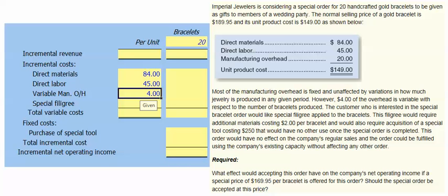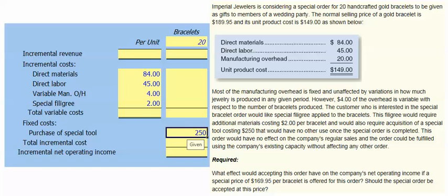The customer interested in the special bracelet order would like a special filigree applied to the bracelets. The filigree would require additional materials costing $2 per bracelet and would also require the acquisition of a special tool costing $250 that would have no other use once the special order is completed. This order would have no effect on the company's regular sales and could be fulfilled using existing capacity without affecting any other order. What effect would accepting this order have on the company's net operating income if a special price of $169.95 per bracelet is offered? Should the special order be accepted at this price?